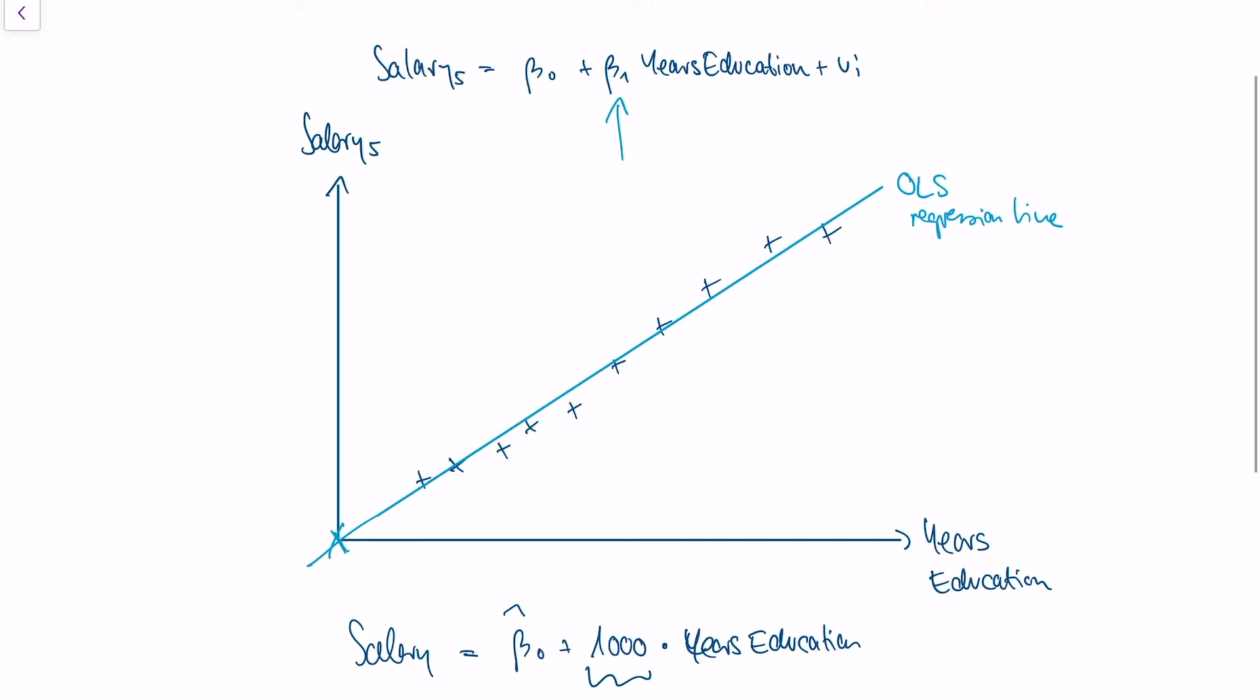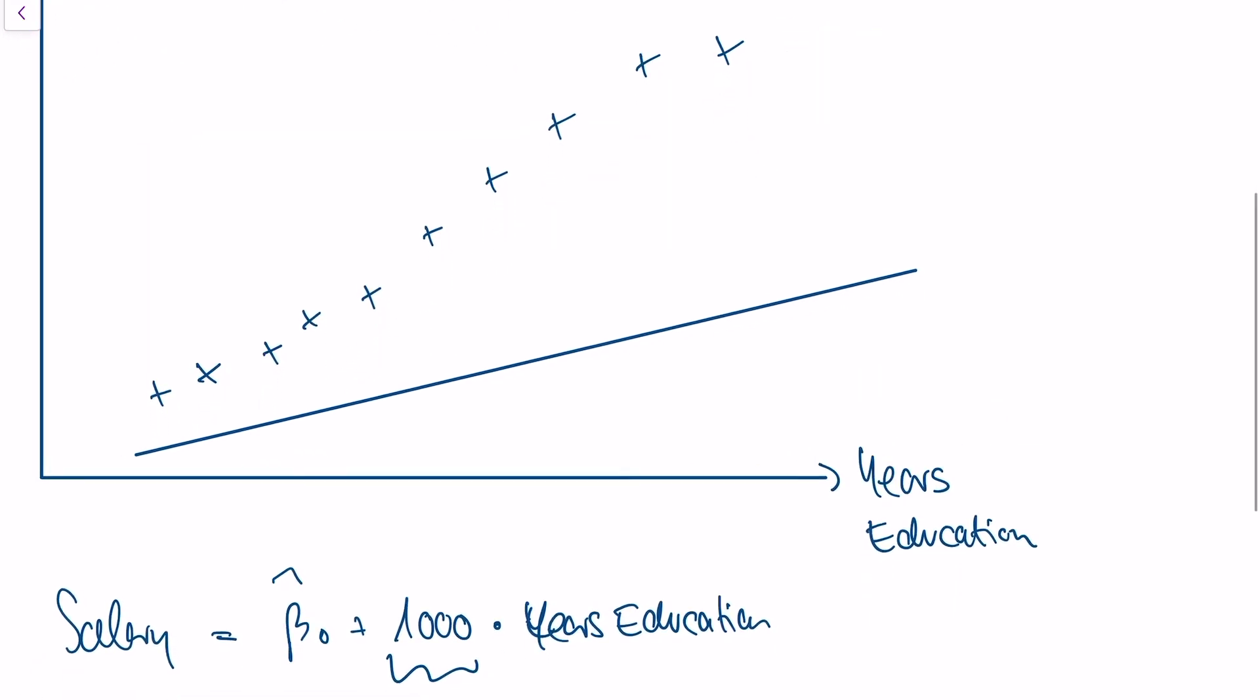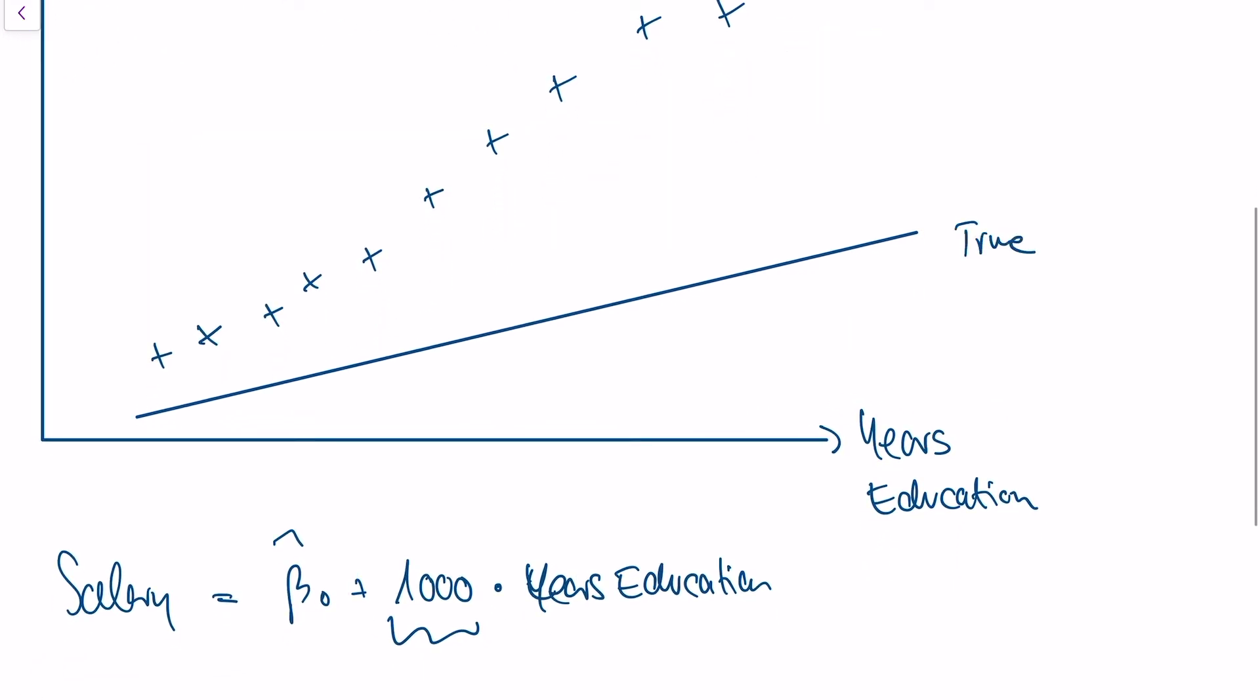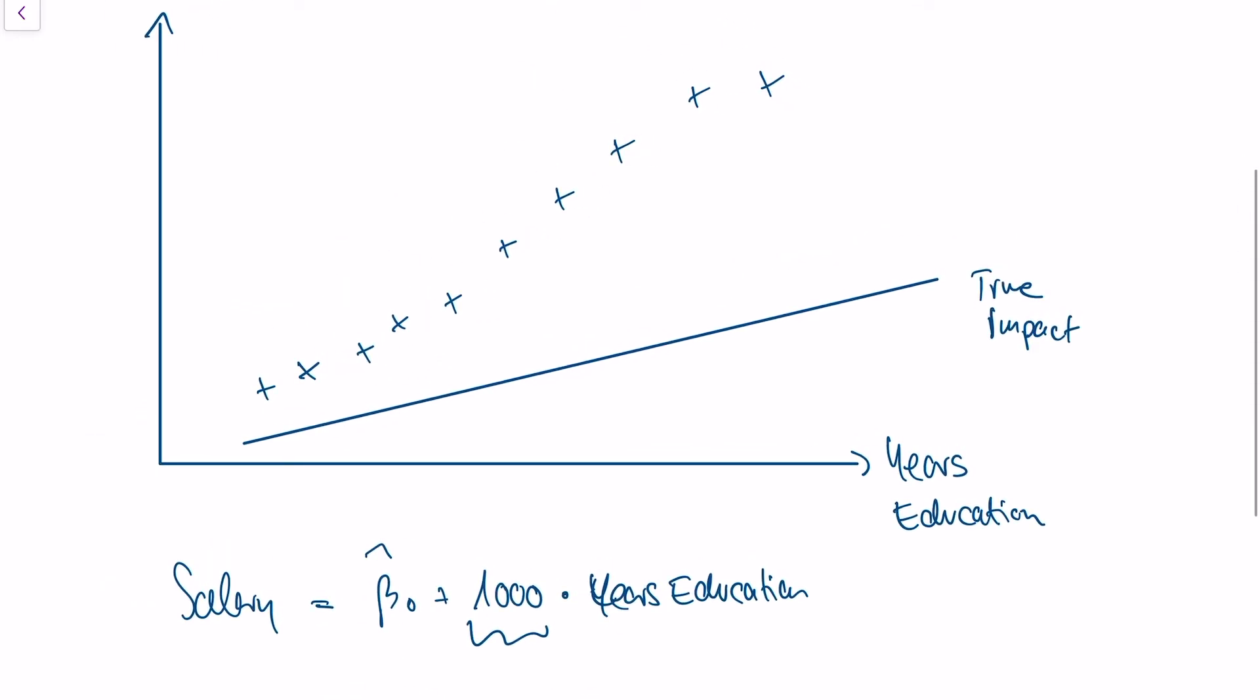And I'm going to explain intuitively what that means in this graph and why our estimation of 1,000 euros in this case is actually wrong. Let's go back to our graph. So we have our data points, and let's say that the true impact of education is like this. So this is the true impact of education on salary.